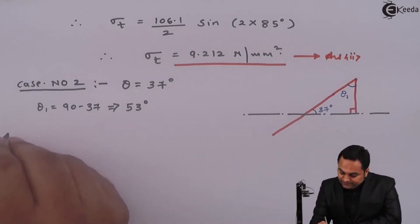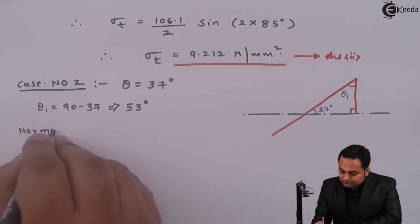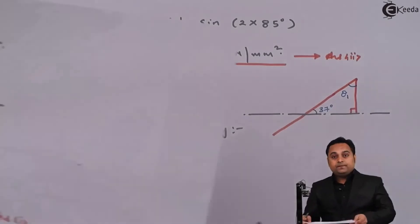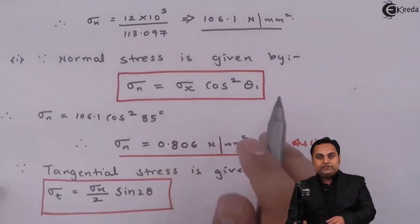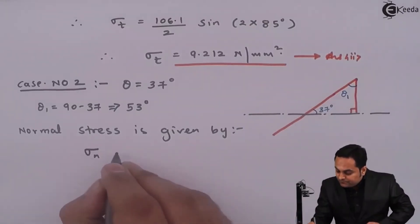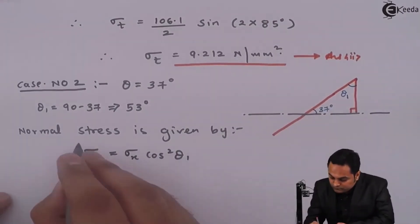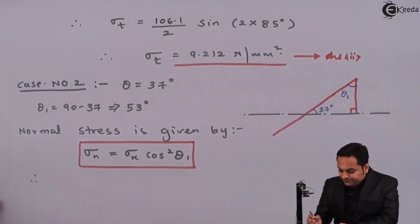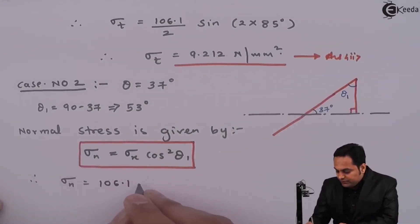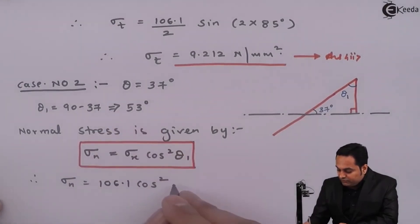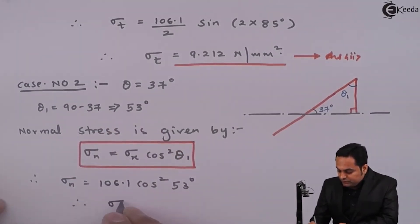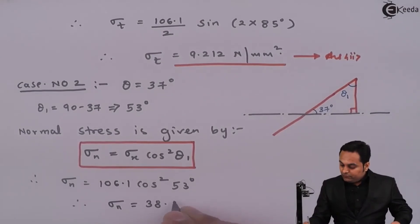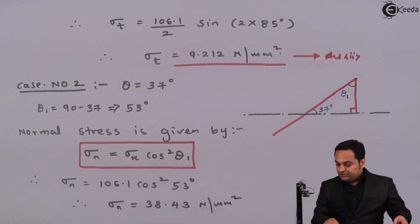Again, the normal stress formula is the same: sigma n = sigma x × cos²(theta 1). Putting the values: sigma x = 106.1, theta 1 = 53 degree. The normal stress answer comes out to be 38.43 N/mm². This is the third answer.